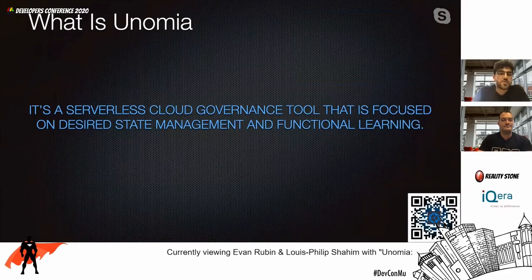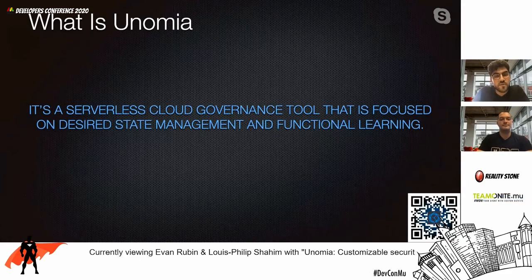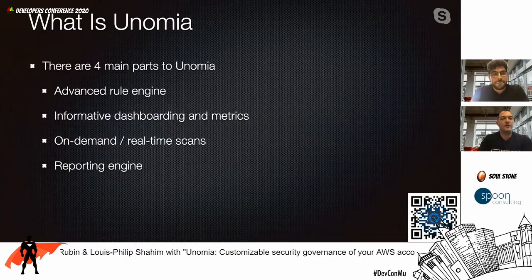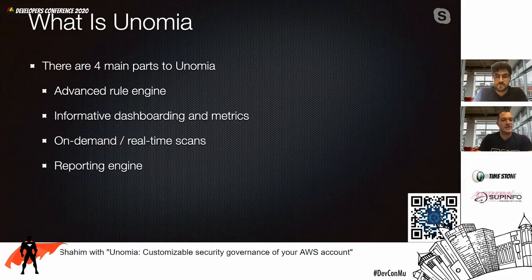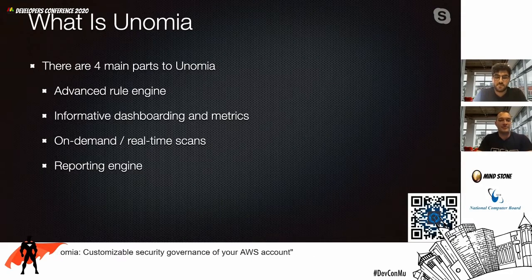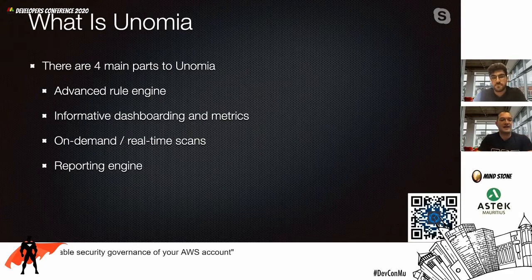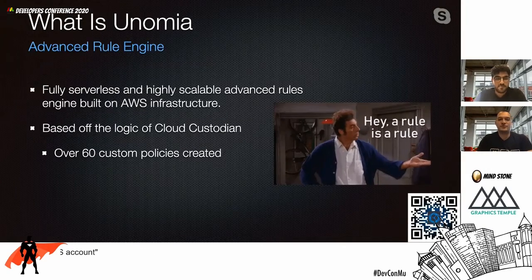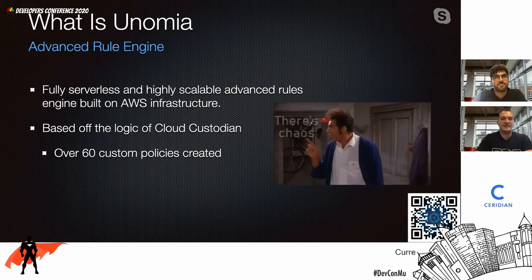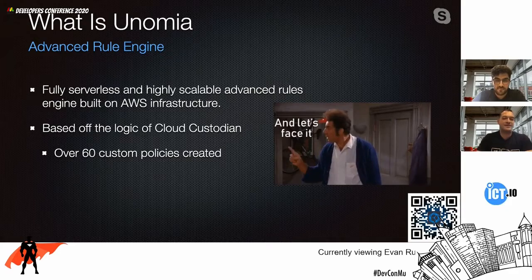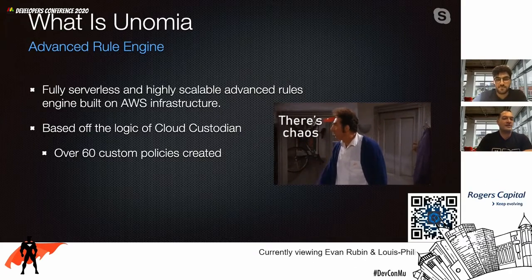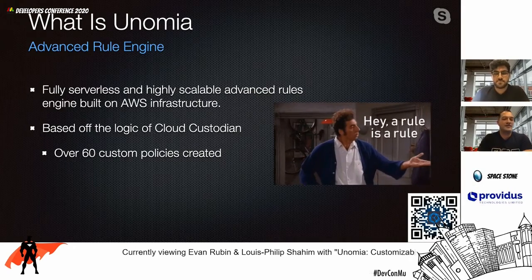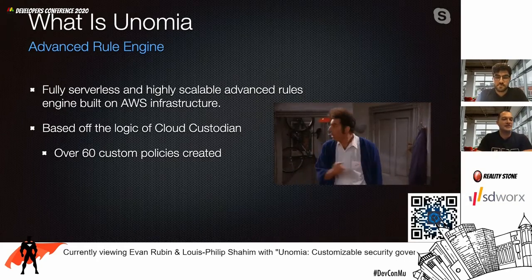At a high level, Unomia is a serverless cloud governance tool focused on desired state management and functional learning. There are four main parts: an advanced rules engine, informative dashboarding and metrics, on-demand and real-time scanning of your environment, and reporting on all of the above. Our advanced rules engine is based on lots of serverless decoupled components. We built our core around an open-source software called Cloud Custodian and have built over 60 custom policies, chaining many of them together to give you a full view of your AWS estate.